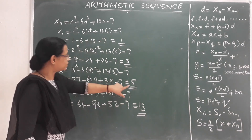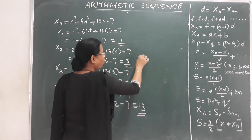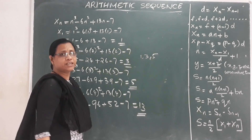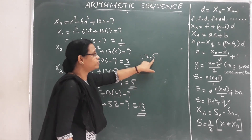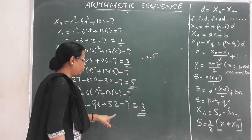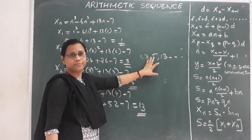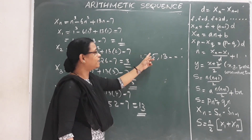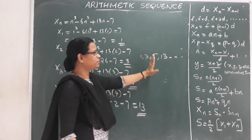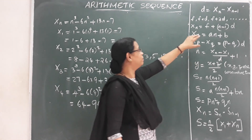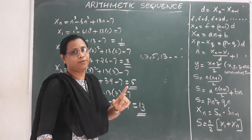So our sequence is 1, 3, 5, 13. For the first three terms the common difference is 2, but the fourth term is 13, which gives a different common difference. Since the common difference is not constant, this sequence is not an AP.